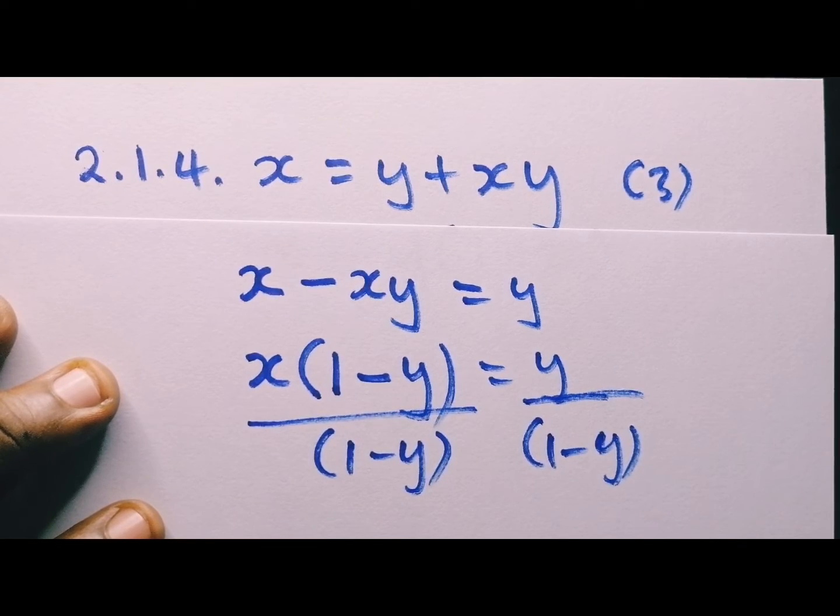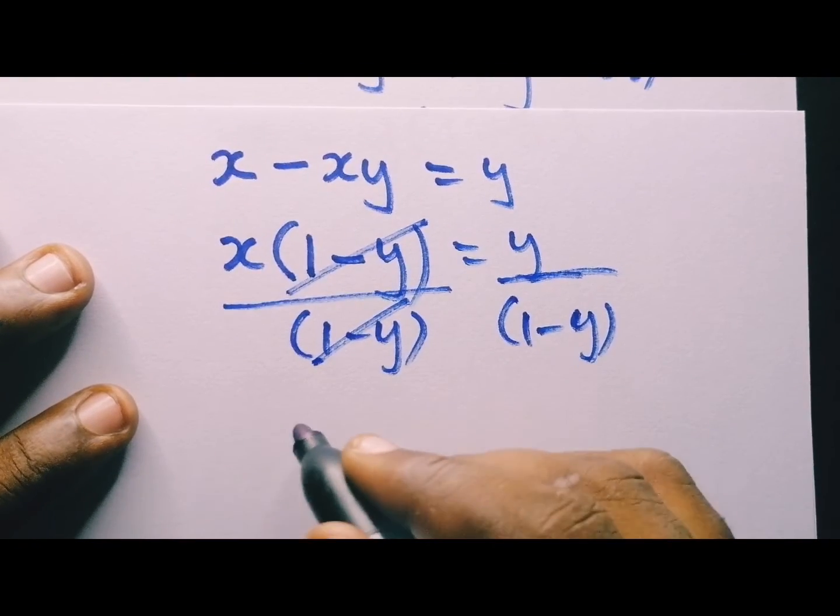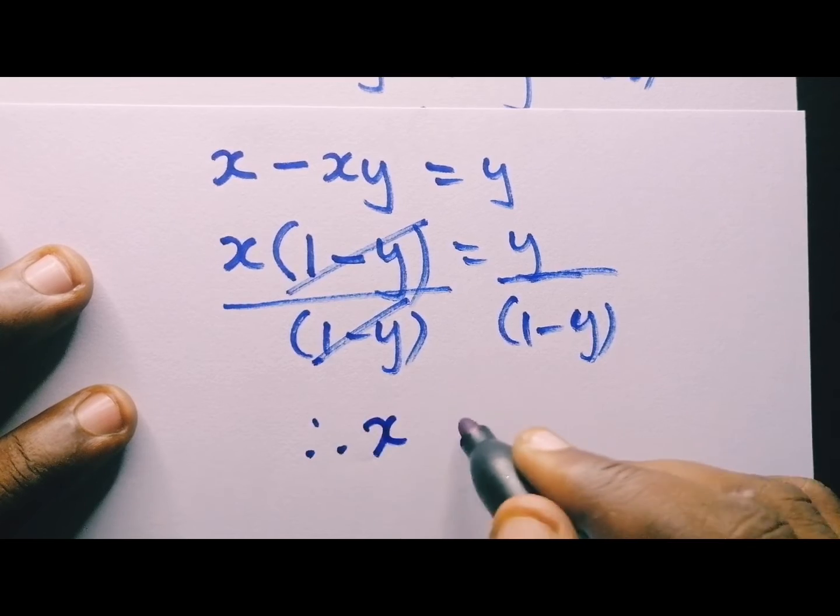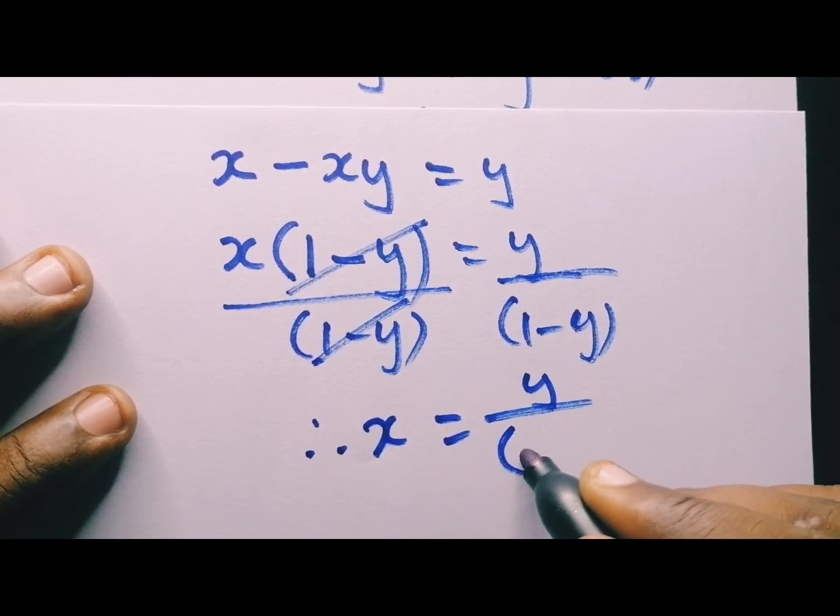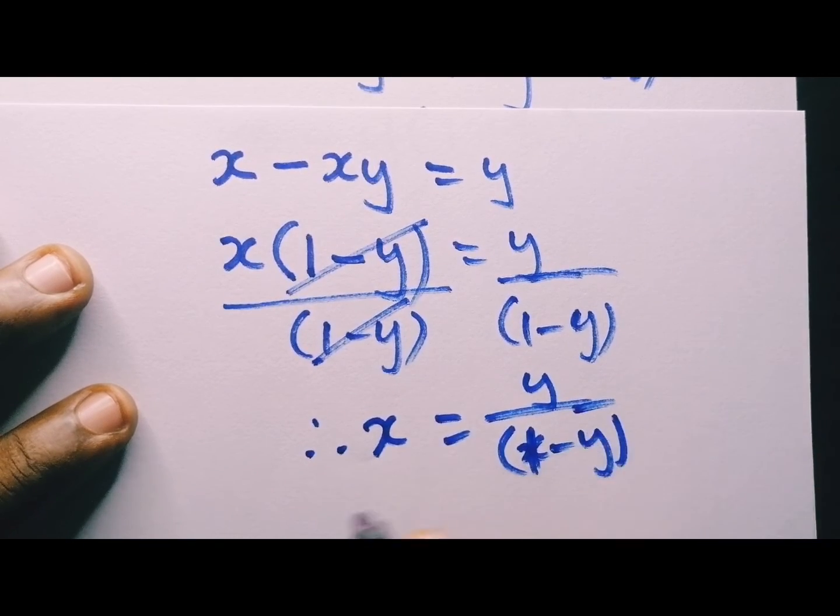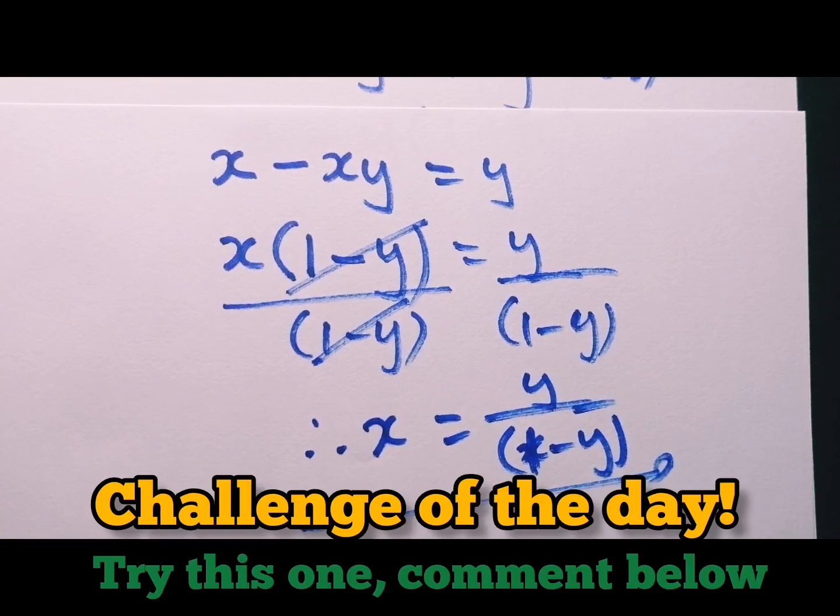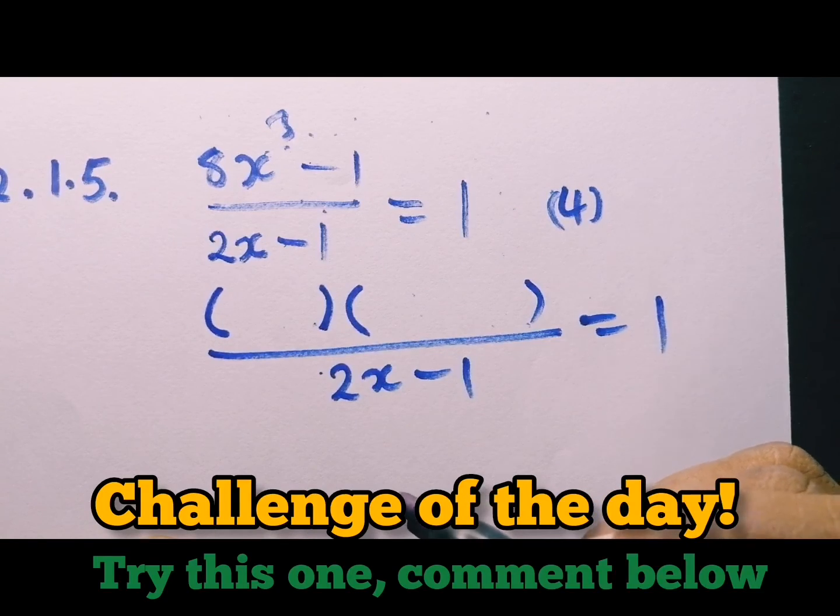This is what you can do. You can expect something like this where they say make r the subject of the formula, make z, make b, make x, you know, subject, to be the subject of the formula. So that's what you do. This is how we get it done. This one will cancel. So therefore, x will be equal to y over 1 minus y. So this is the version of the answer you can expect. This is how we get it done.